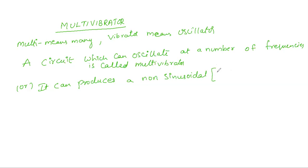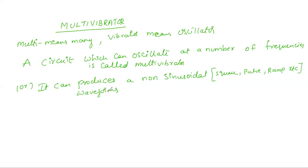What are the non-sinusoidal signals? Square, pulse, ramp, etc. All these come under the non-sinusoidal waveforms. A circuit which can produce these waveforms is called as a multivibrator.